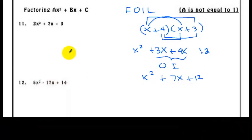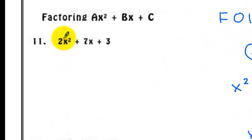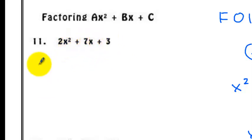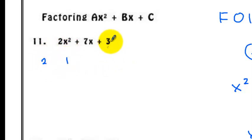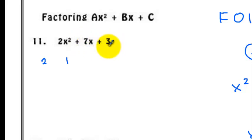Let's solve our first example. In this case, a is not equal to 1. The first thing to check is if we have a GCF. In this particular example, we don't have a GCF, so we can proceed by factoring the trinomial. I'll get the factors of 2: 2 and 1. For the factors of 3, since the last term is positive, the sign of the factors should match the middle term. Since the middle term is positive, the factors of 3 will both be positive.